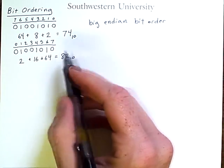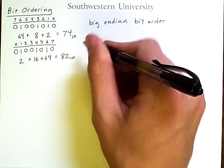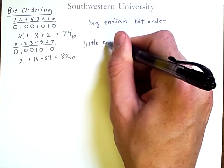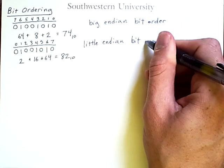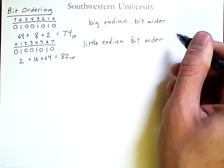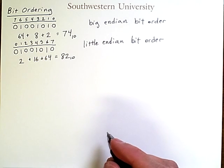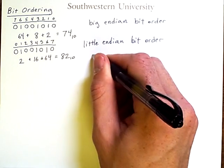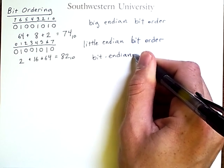In contrast, this ordering in which we go from the least significant bit to the most significant bit is known as little endian bit order. The question of how we order our bits is called bit endianness.